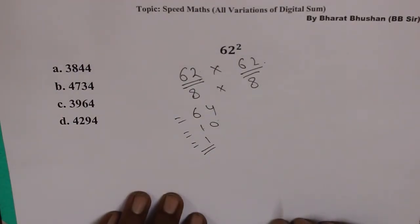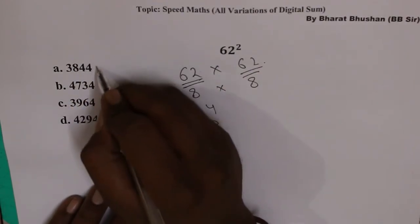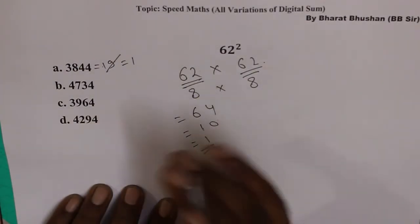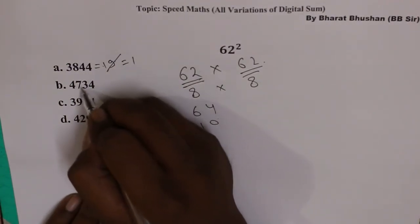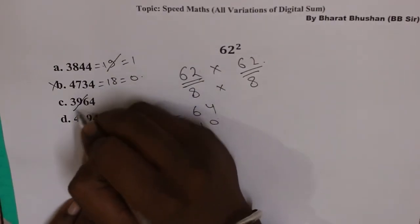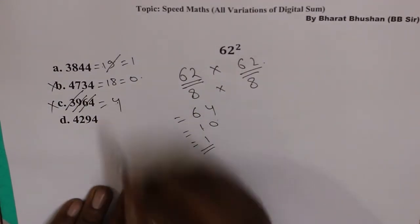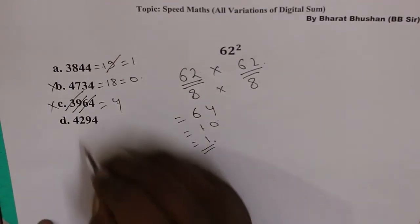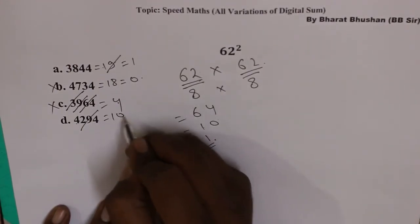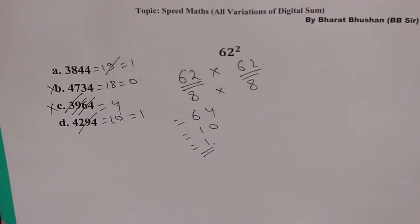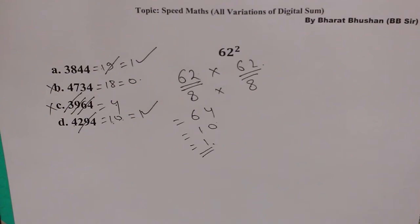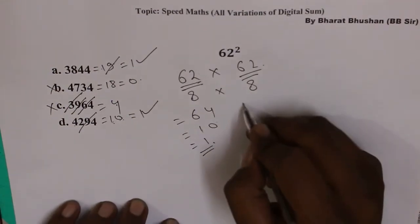Now we check the options for digital sum 1. Option A: 4 plus 4 is 8, plus 8 is 16, plus 3 is 19, 9 eliminate kar diya, leaving 1 — option A is a candidate. Option B: 7 plus 3 is 10, plus 8 is 18 — that gives 0, so B is not the answer. Option C: 9 eliminate, 3 and 6 eliminate, leaving 4 — not 1, so C is not the answer. Option D: 9 eliminate, 4 plus 4 plus 2 is 10, 1 plus 0 is 1 — digital sum is 1. So we have a tie between A and D.